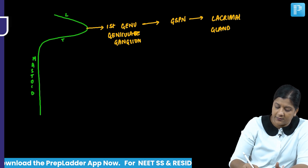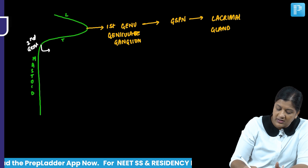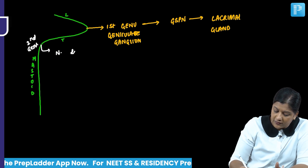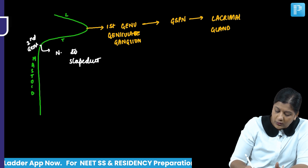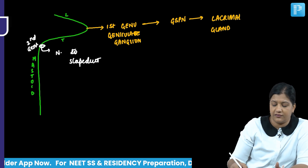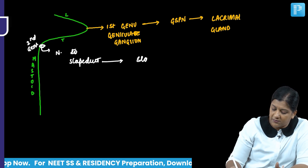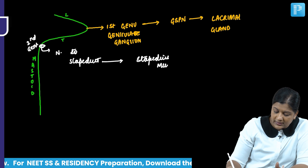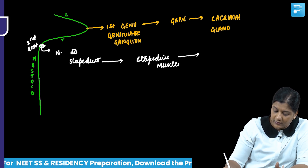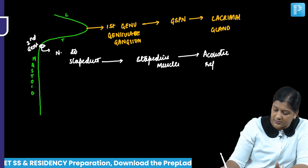From the second genu arises the nerve to stapedius, located just below the second genu. This nerve supplies the stapedius muscle, and we assess its function by performing an acoustic reflex or stapedial reflex test.